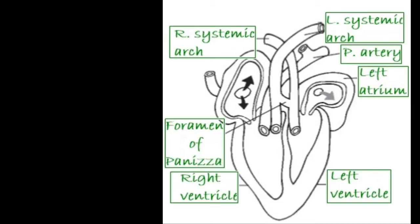This one is right atrium. This one is left atrium. This one is right ventricle. This one is left ventricle. This is the interventricular septum.